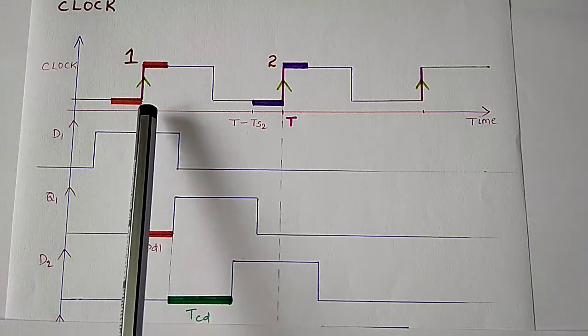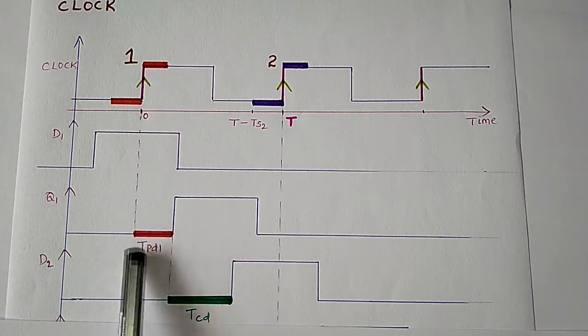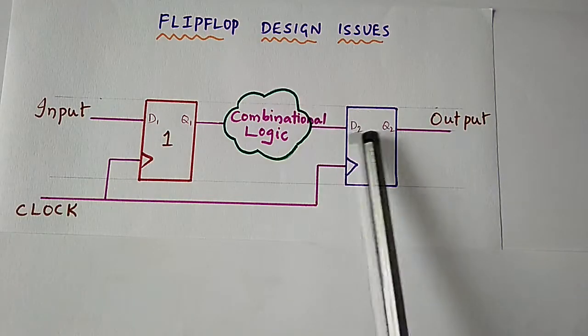So we get this same pulse here but after first rising clock edge and with a delay of tpd1. This signal is further delayed due to combinational circuit propagation delay of tcd and this is also the input to second flip-flop.